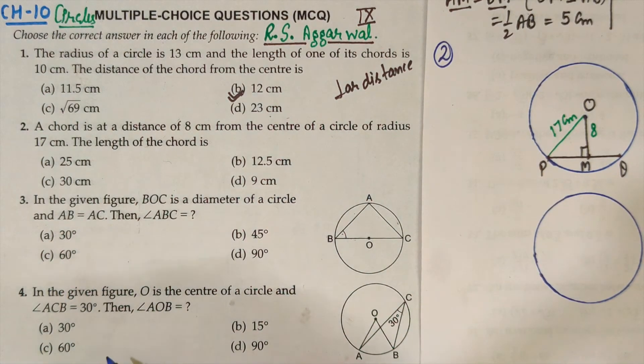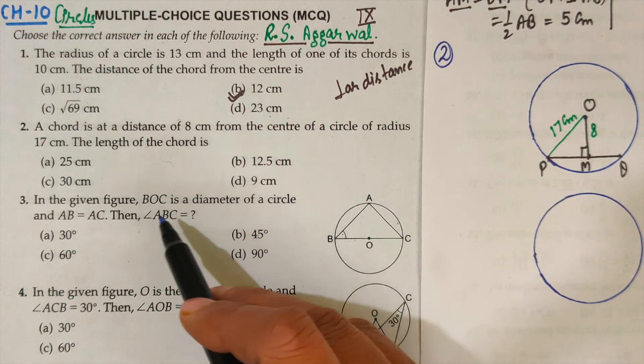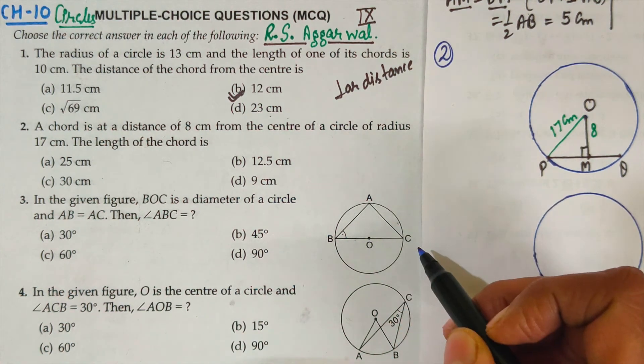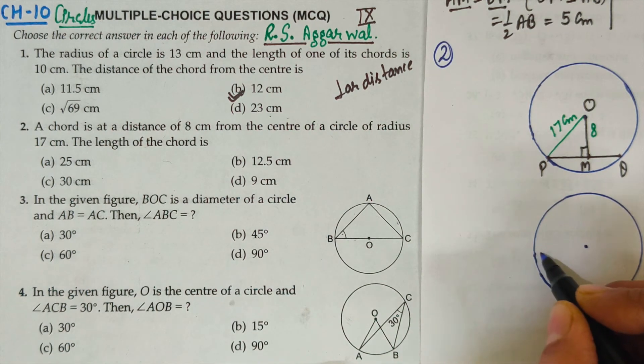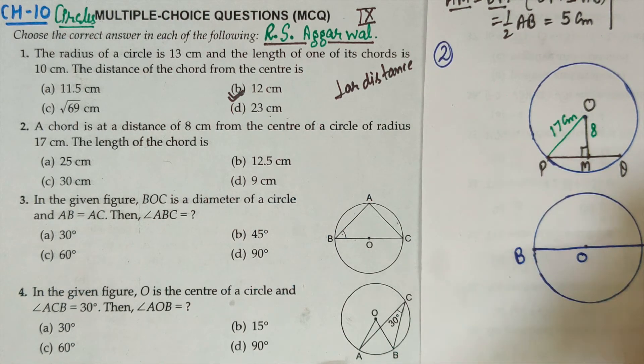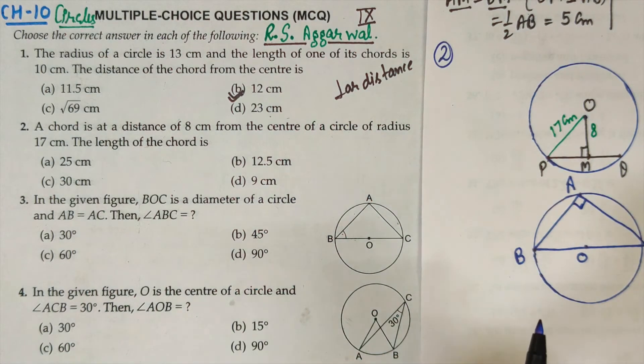Let us understand the third question. Point to be noted that BOC is diameter. In this diagram, BOC is diameter. So what does diameter remind us of? Angle in the semi-circle. The angle formed in a half circle is always 90 degree. Any angle formed in a semi-circle will always be 90 degree.